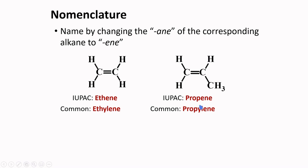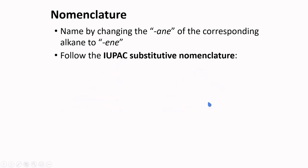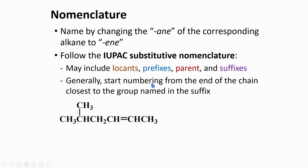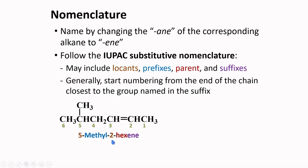The difference in the name is only in the suffix. To name alkenes, we follow the IUPAC substitutive nomenclature using locants, prefixes, parent, and suffixes. Generally, we start numbering from the end of the chain closest to the group named in the suffix — the suffix will be '-ene', and the ene group is found at a specific position. Our numbering should start at the terminal carbon closest to the ene group. The ene group starts at carbon 2, and we have a methyl group at carbon 5, so we call this compound 5-methyl-2-hexene.